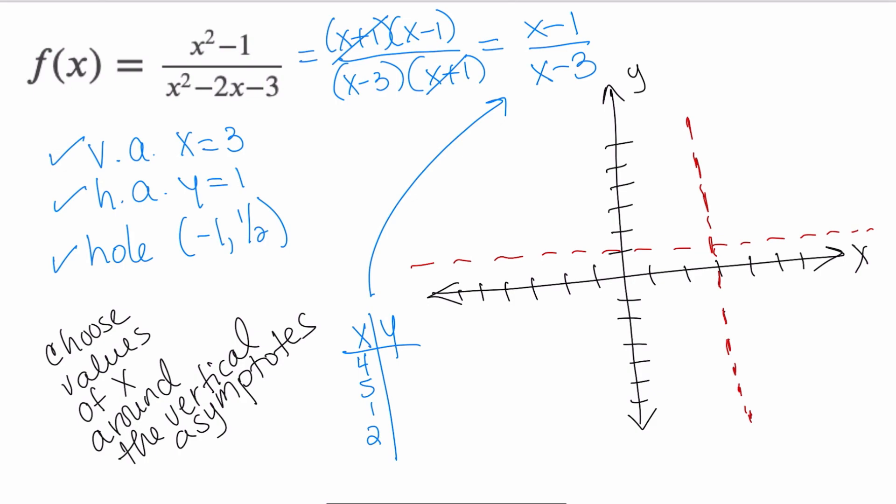If x is 4, 4 - 1 is 3 and 4 - 3 is 1, 3/1 is 3. So at 4, I'm at positive 3. That's enough, honestly, to tell me that the graph is going to open up this way.